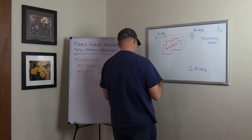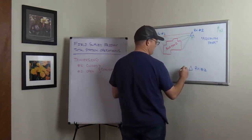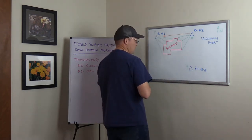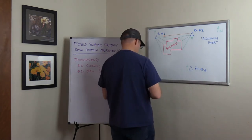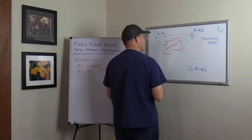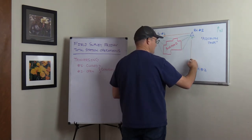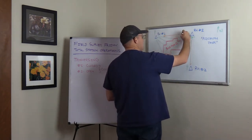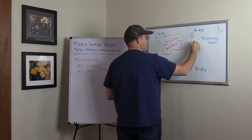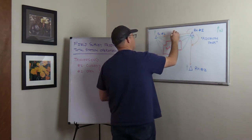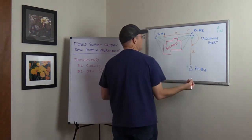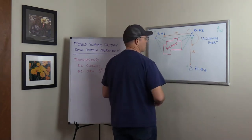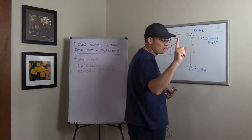Then what we do is we turn and we sight our foresight rod at RH number three. It might be a tribrac and a glass on a tripod, but in my shop it's usually a bipod. We turn down here to RH three — we've turned this angle, and it's going to be an angle to the right. We've stored these slope distances — both slope distances. Our total station software or data collector is going to calculate a coordinate at three. Now we know where three is at. That's the first angle in our traverse.